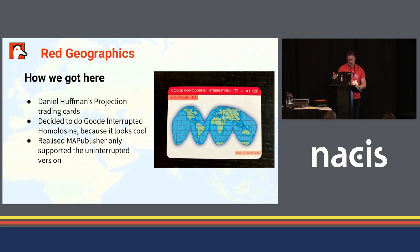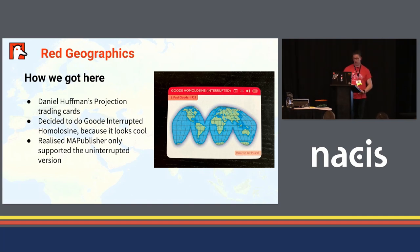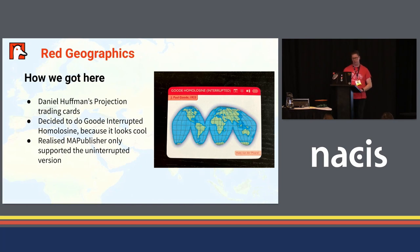I want to talk about the map I made for Daniel Huffman's projection trading cards project. When he came up with that idea, I thought I'd do the Goode's interrupted homolosine projection because it looks cool. I hadn't actually done it before, and I quickly came to the realization that MAPublisher, my preferred tool, only supported the uninterrupted version. So I had to do a little bit of extra work to make it work.